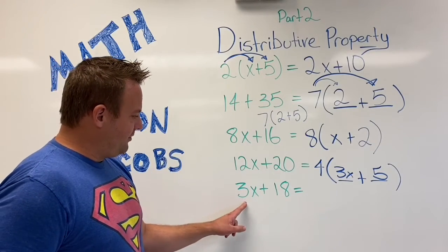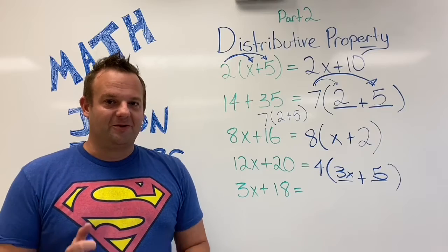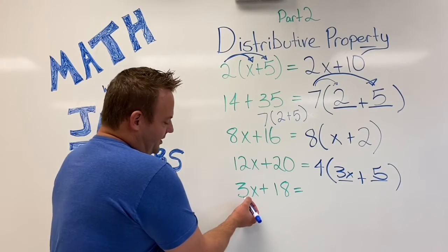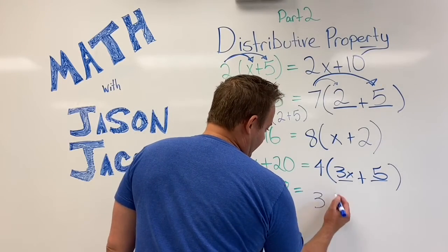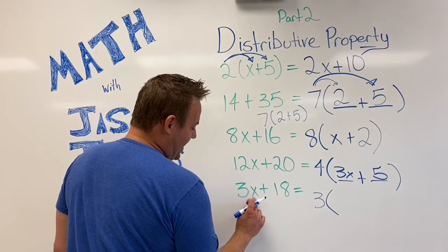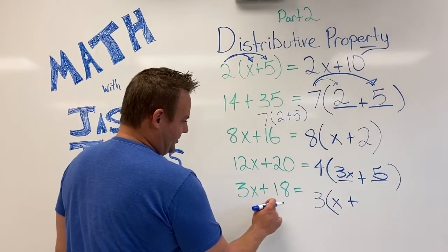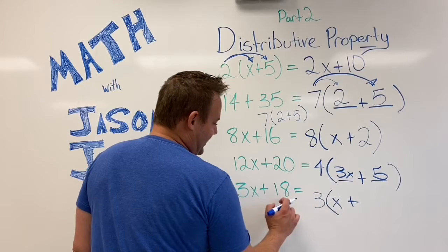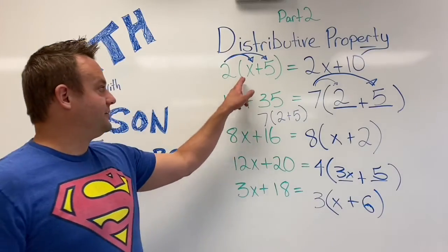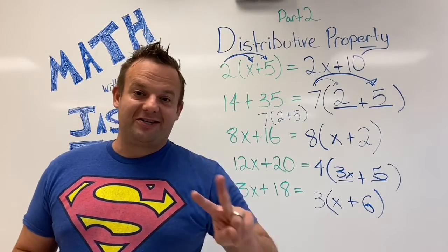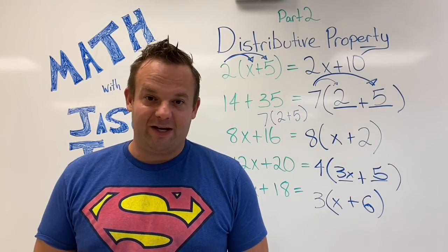So now 3X plus 18 — try this one on your own. What goes into both 3X and 18? Did you say 3? That's right. So 3, and then 3 times what is 3X? X. Plus — if this were a minus, you would put a subtraction sign — 3 times what equals 18? That's right, 6. So it's really just the reverse of the Distributive Property. That's the Distributive Property part 2. My name is Jason Jacobs. Please like and subscribe and I'll check you out on our next math video. Keep doing your math.